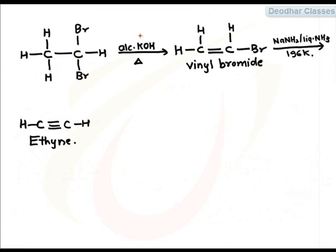When 1,1-dibromoethane is treated with alcoholic KOH, K will take up one of the Br, so KBr will be lost. OH will take up adjacent H, water molecule will be lost, and again we'll get vinyl bromide.